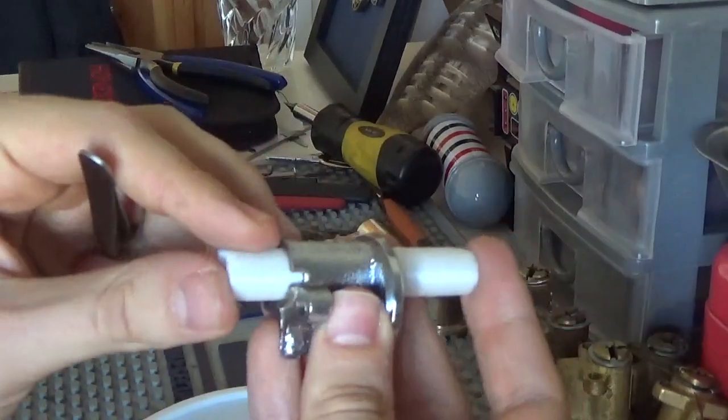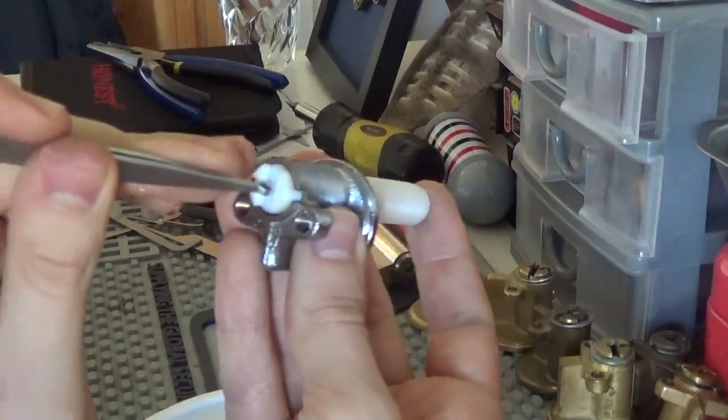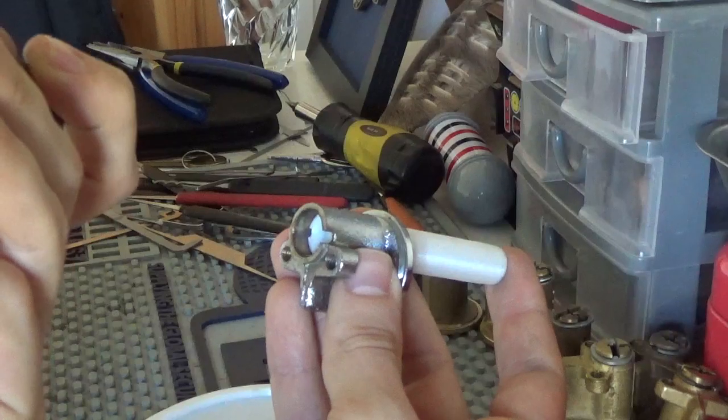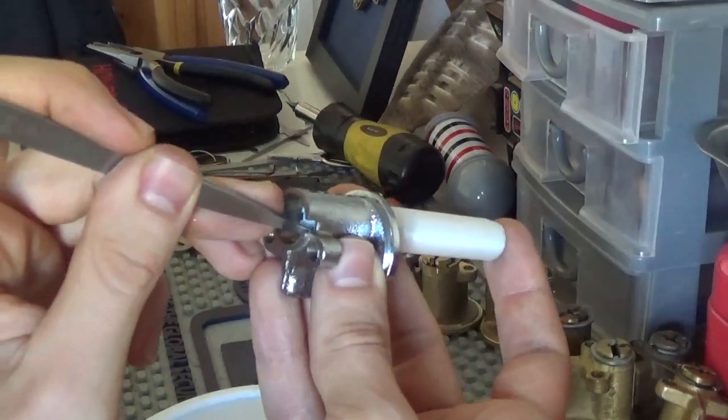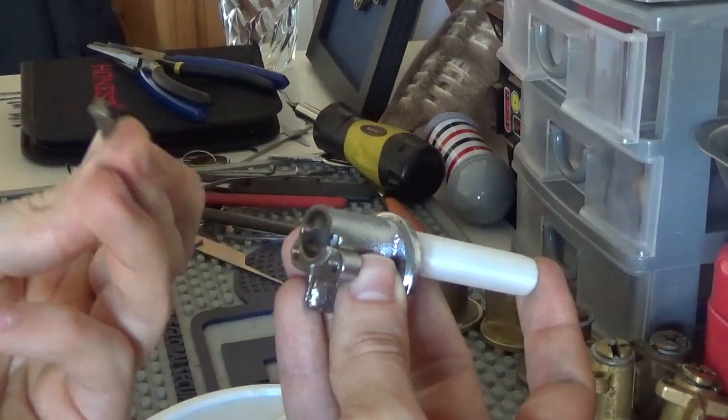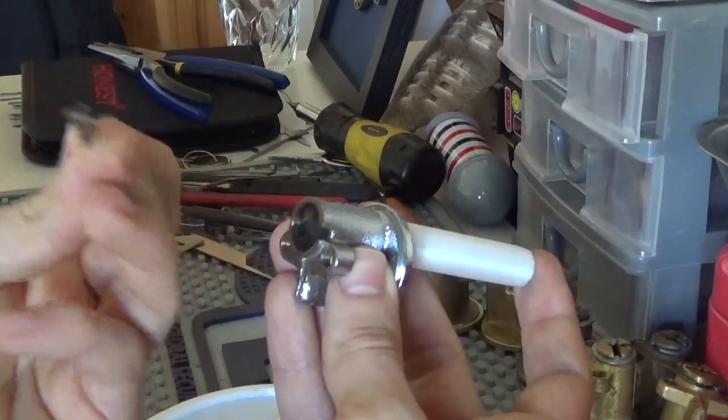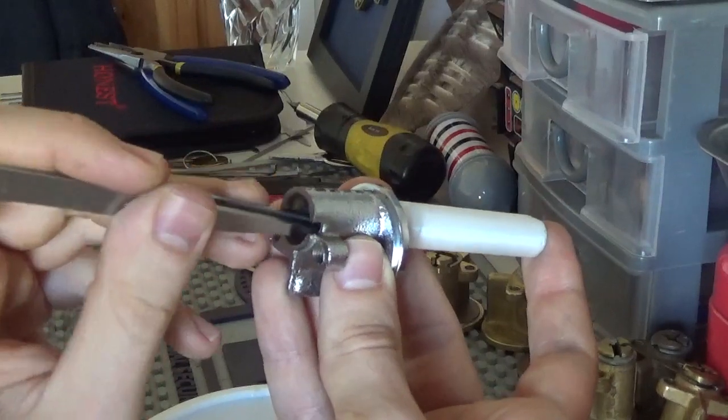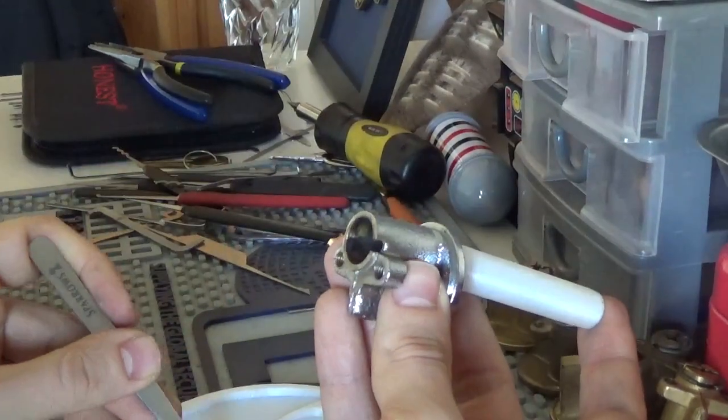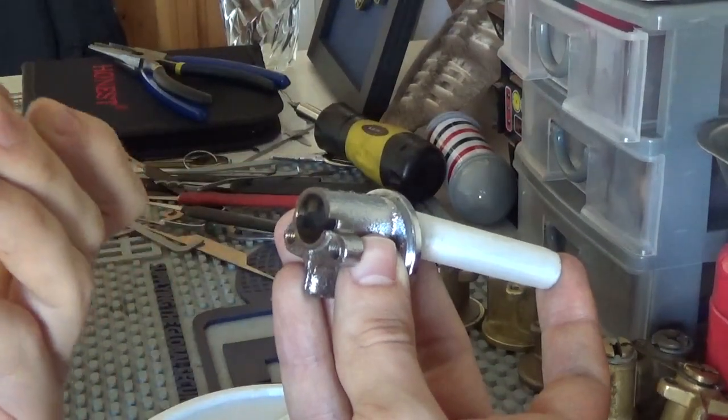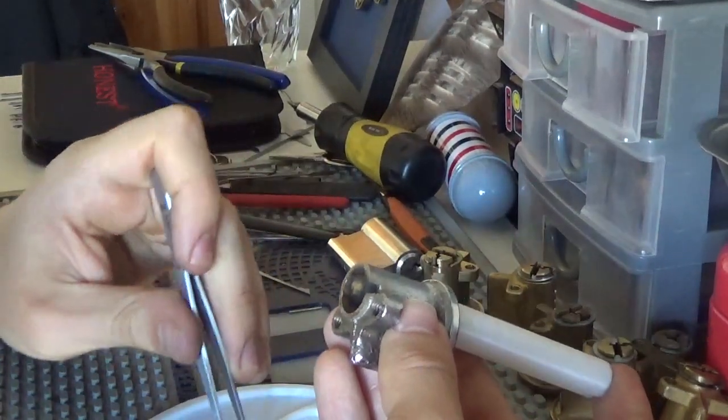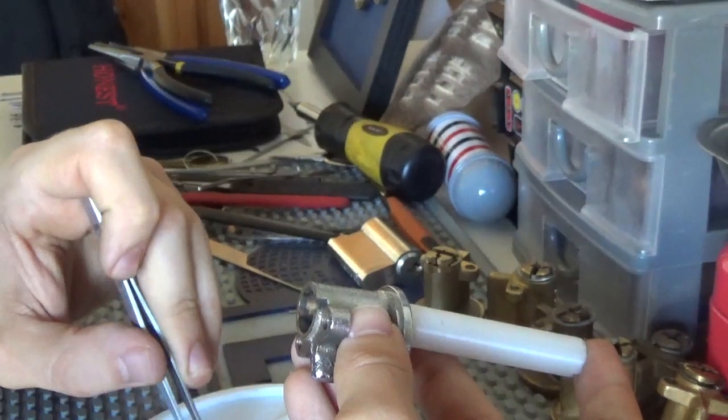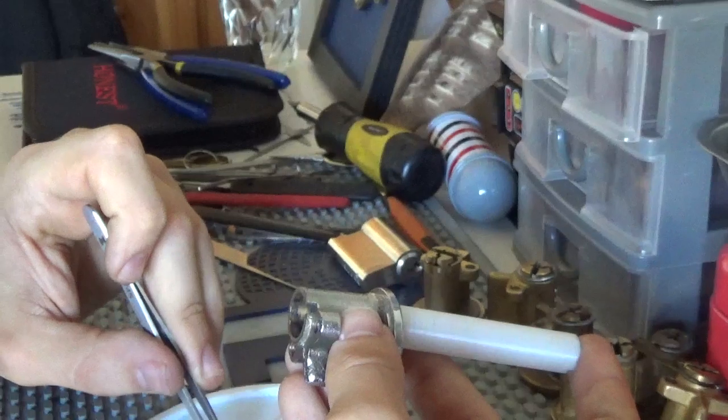So I will go from the back first, start from number five. Number five is a nice sharp little spool, nice. Number four is a standard. Number three is a mushroom, nice, wasn't expecting that. Number two is a standard and number one is a really long mushroom. That's a really long mushroom. Now this could be also castle pins but I think it's not, just a mushroom pin.